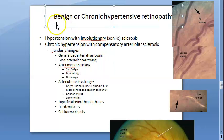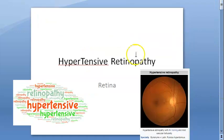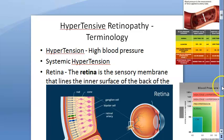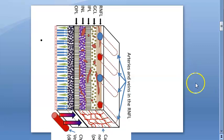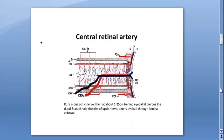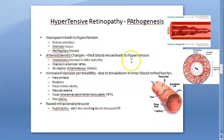In this video we want to look at the benign or chronic hypertensive retinopathy, the clinical features. Systemic hypertension can lead to some damages in the retina — mainly the arteries. There can be increased vascular permeability, hemorrhage, exudates, edema, papilledema, and optic disc swelling.